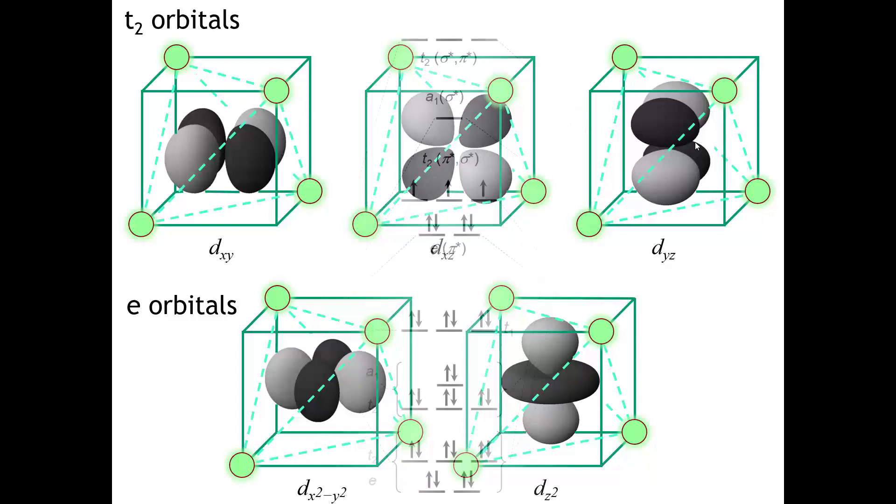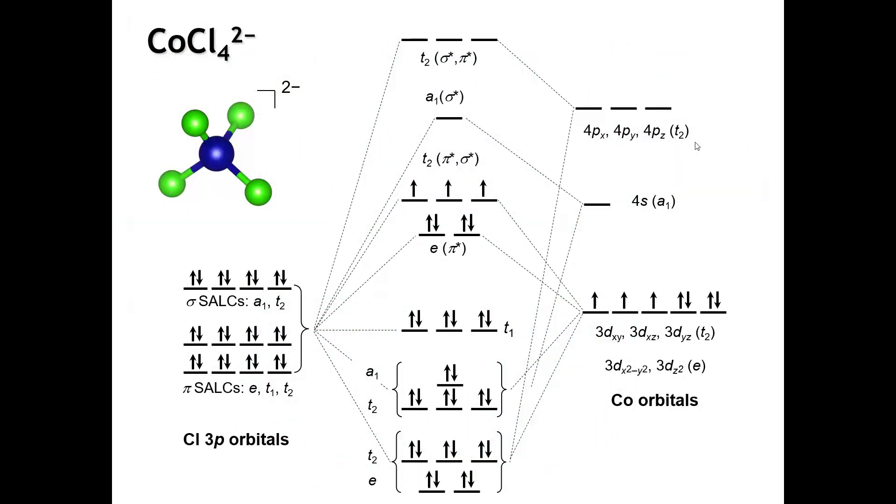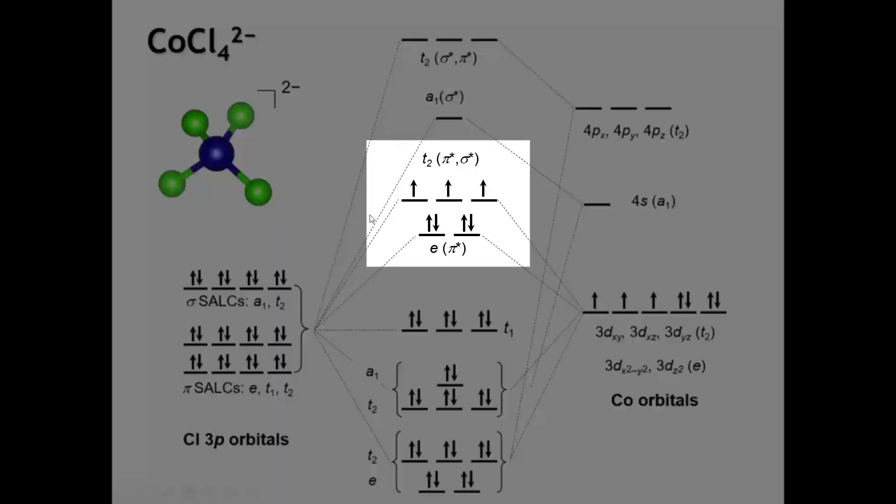Ultimately, what that gives us is an MO diagram that looks like this. Nine bonding MOs, nine antibonding MOs. And now we have only three non-bonding ligand MOs because there are fewer ligands. Once again, the part we're normally most interested in is this right here, these antibonding interactions between the ligands and the d orbitals on the metal.